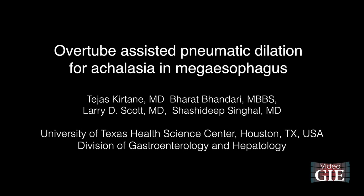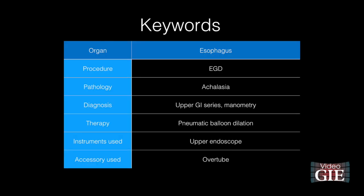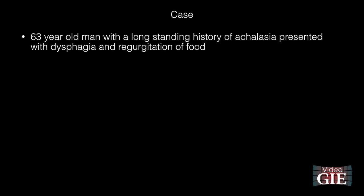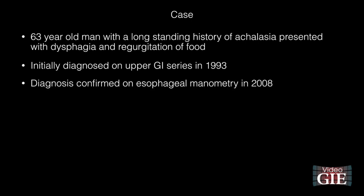Overtube-assisted pneumatic dilation for achalasia in megaesophagus. A 63-year-old man with a long-standing history of achalasia presented with dysphagia and regurgitation of food. Achalasia was initially diagnosed on upper GI series in 1993, and the diagnosis was confirmed on esophageal manometry in 2008.